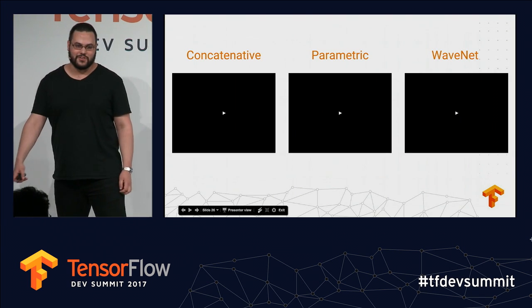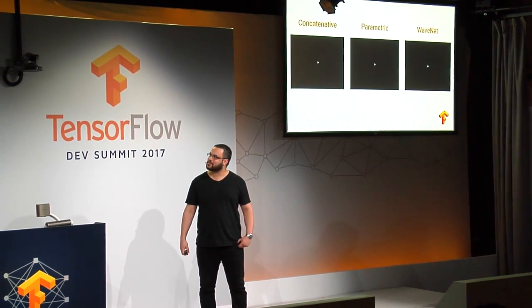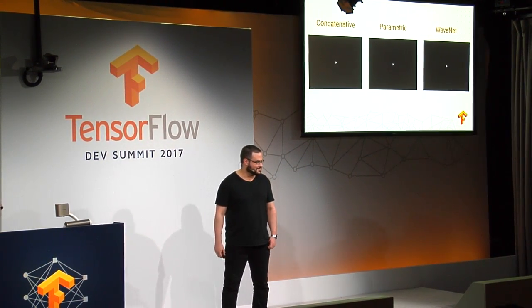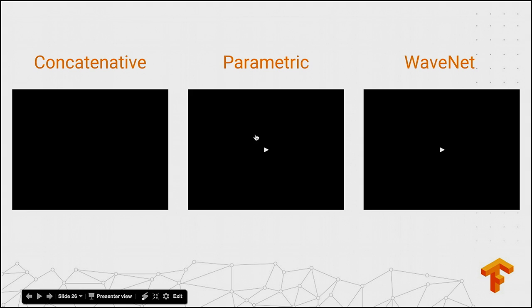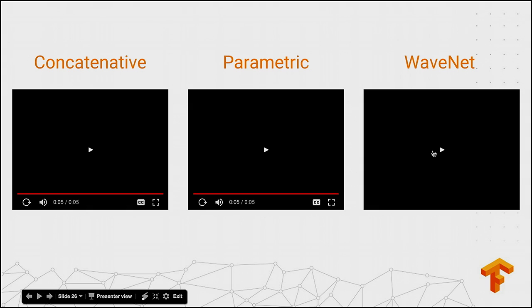Here are some samples generated from various systems. On the left, we have audio from a concatenative model: 'The Blue Lagoon is a 1980 American romance and adventure film directed by Randall Kleiser.' If you listen closely, you can perceive some discontinuities due to slight mismatches in the transitions between different recorded chunks. In the middle, a parametric model: 'The Blue Lagoon is a 1980 American romance and adventure film directed by Randall Kleiser.' Which is less choppy but doesn't have that natural quality we associate with normal speech. And finally, WaveNet: 'The Blue Lagoon is a 1980 American romance and adventure film directed by Randall Kleiser.' Which compared to the other two is very smooth and natural.